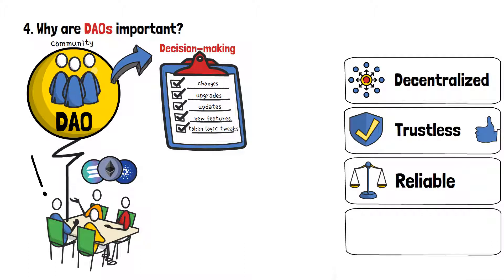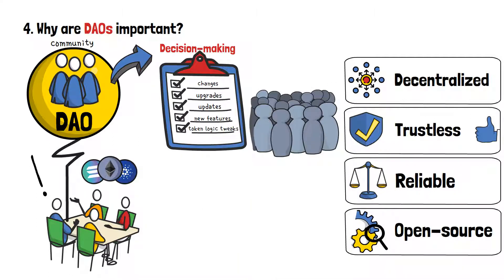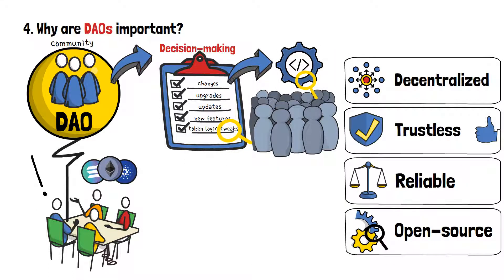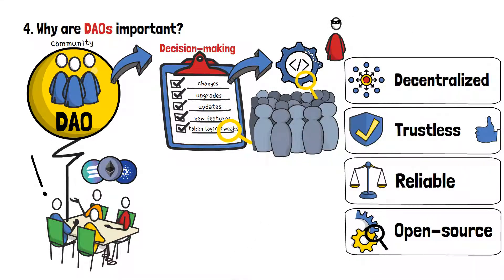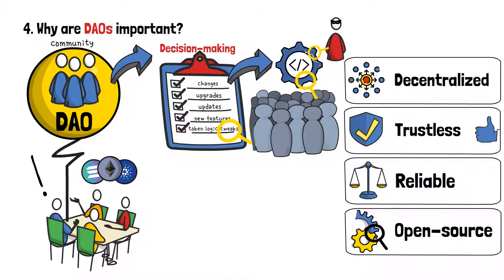Another benefit — and also a shortcoming in a way — is the fact that DAOs operate in an open source manner. What this means is that their processes can be viewed at any point in time, and the integrity of their decisions and following code can be inspected by anybody. The shortcoming here is that DAOs then become vulnerable to external attacks. Since everything is out there in the open, malicious third parties might spot a loophole and take advantage of it.